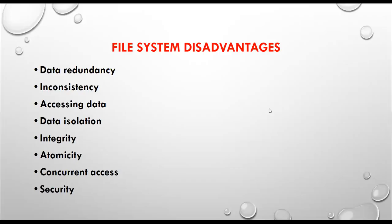Today we shall see the disadvantages of traditional file systems. In the slide it is listed out: data redundancy, inconsistency, accessing data, data isolation, integrity, atomicity, concurrent access, and security. Let us see all these points one by one.